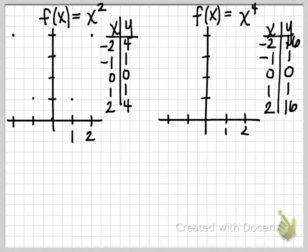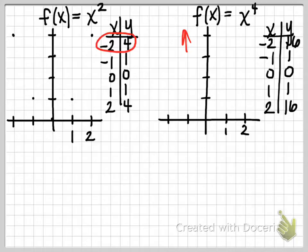The point negative 2, 16 is obviously way off my grid. We know that would be way up high — much higher than the corresponding point on y equals x squared, which was negative 2, 4. So that's okay, it's off the grid, no problem. Let's go ahead and plot the ones that we can.